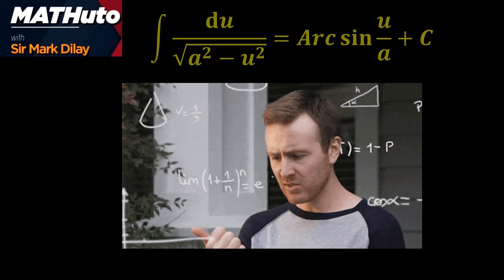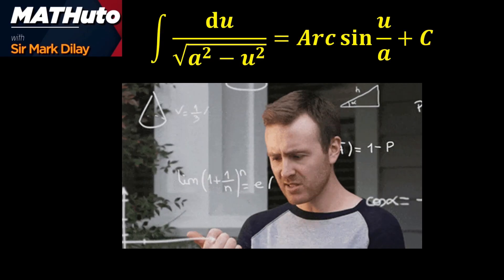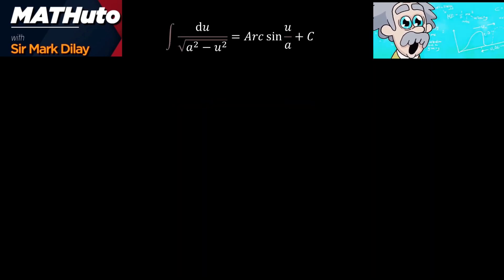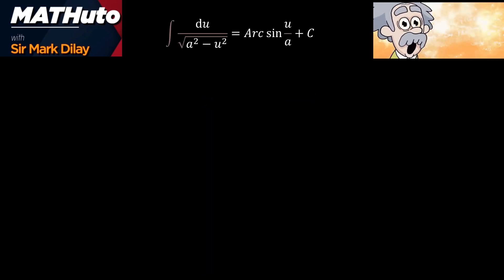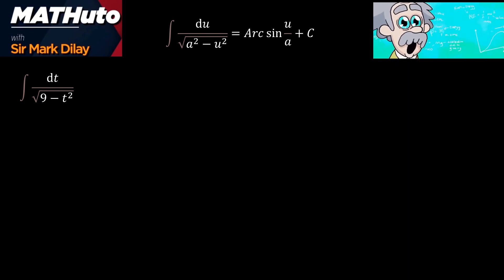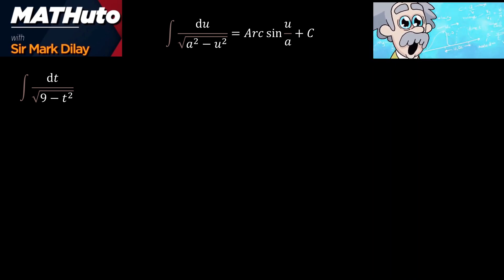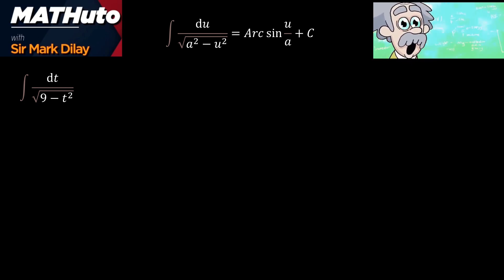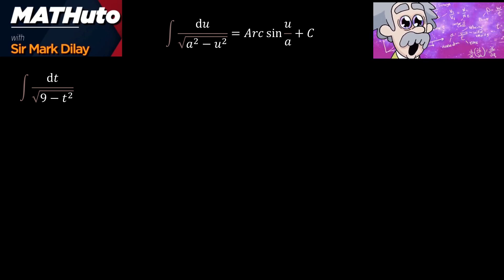Let us solve examples on inverse trigonometric functions. The integral of du over the square root of a² minus u² is equal to arcsin(u/a) plus C. Our first given is the integral of dt over the square root of 9 minus t². First, identify u and a. a² here is 9 because a is constant.